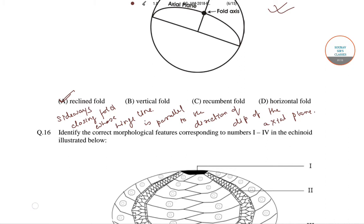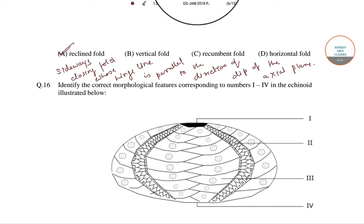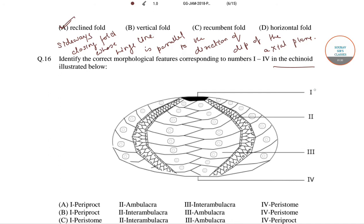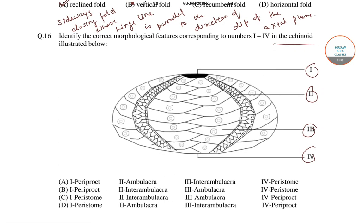In the next question, we have this image which shows the morphological features corresponding to an echinoid. They are numbered 1 to 4 and we have to show which of the following is the correct naming of these 4 points.